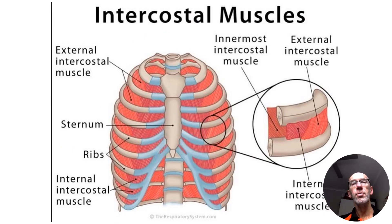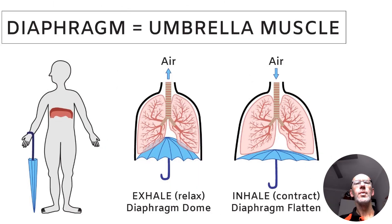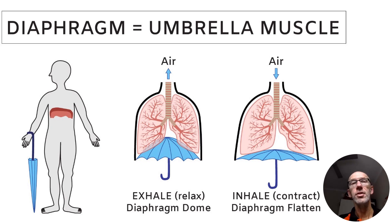In terms of the mechanics of breathing, the intercostal muscles play a major role because they enable the chest cavity to expand and contract as we inhale and exhale, altering the volume of the lungs. The other key muscle involved is the diaphragm, which helps move the lungs up and down, increasing and decreasing lung volume, which alters the air pressure in the lungs.